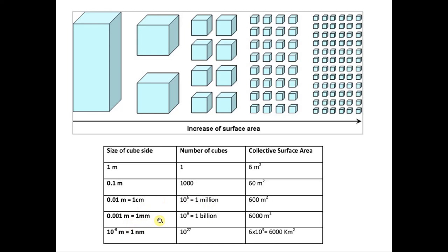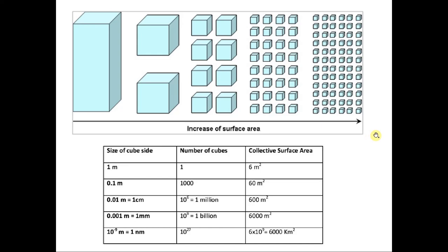If I reduce the size to 1 nanometer, I can put in 10 to the power of 27 cubes, and the surface area becomes 6 times 10 to the power of 9 square meters — or 6000 square kilometers. So surface area to volume ratio increases greatly — the volume remains the same, but the collective surface area keeps increasing as you reduce the size.